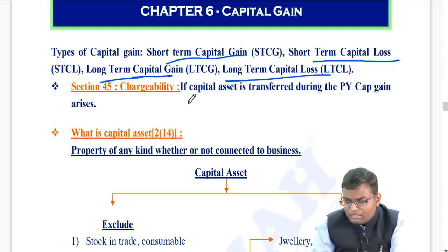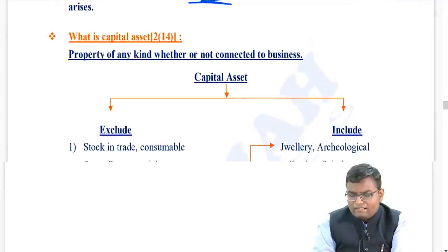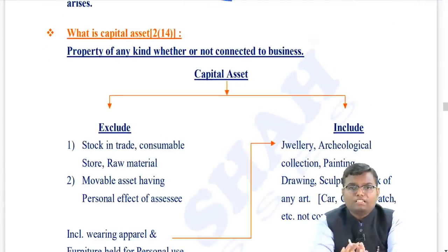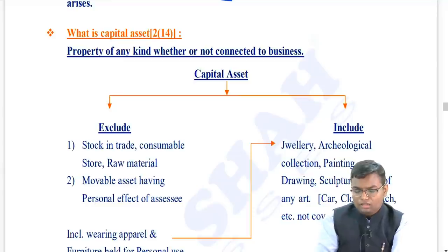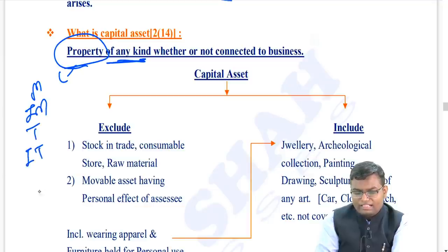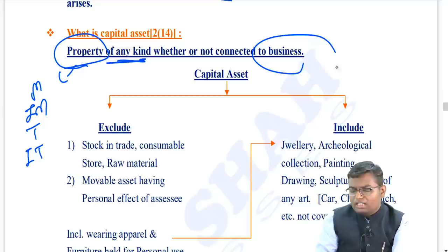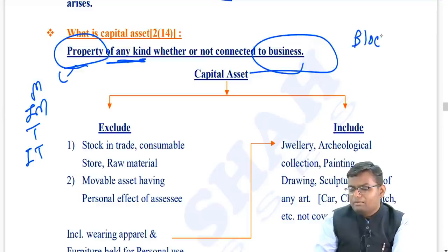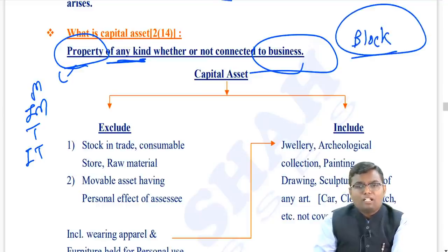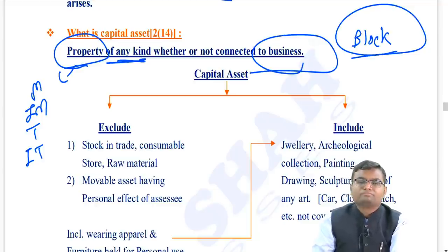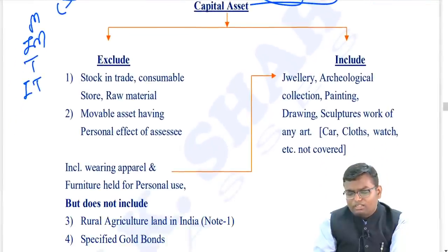Section 2(14) defines capital asset as property of any kind - movable, immovable, tangible, or intangible - whether or not connected to business. Even business property is a capital asset. That's why in the PGBP chapter, whenever you sell a block and the value becomes negative, we call it short-term capital gain, because a block of assets, even though a business asset, is still a capital asset.